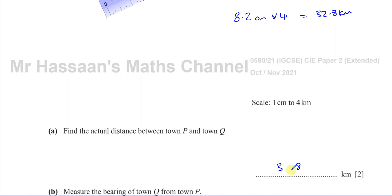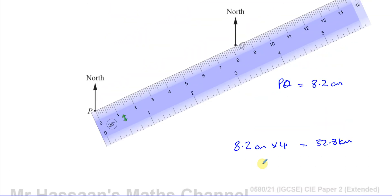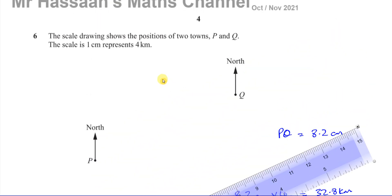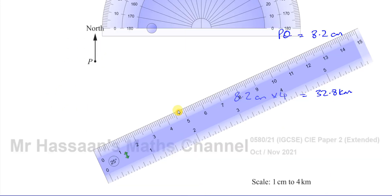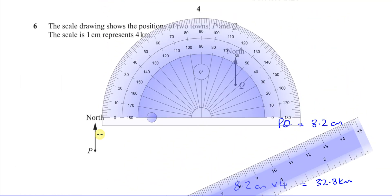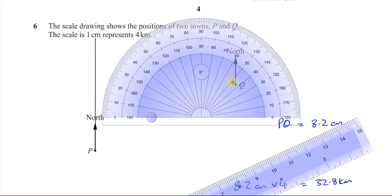Then it says for part B, it says measure the bearing of town Q from town P. Town Q from town P. So what we need to do now is we need to take our protractor, which is over here. And we've got to measure the angle from the north line. The north line is already drawn. It says of town Q from town P. So we're starting at P. So the north line has to be at P. I'm just going to extend it a bit so it's easier to see in our protractor. And also make it a bit thinner so it's a bit more accurate. Okay, so there's the north line. I've just extended it a little bit.